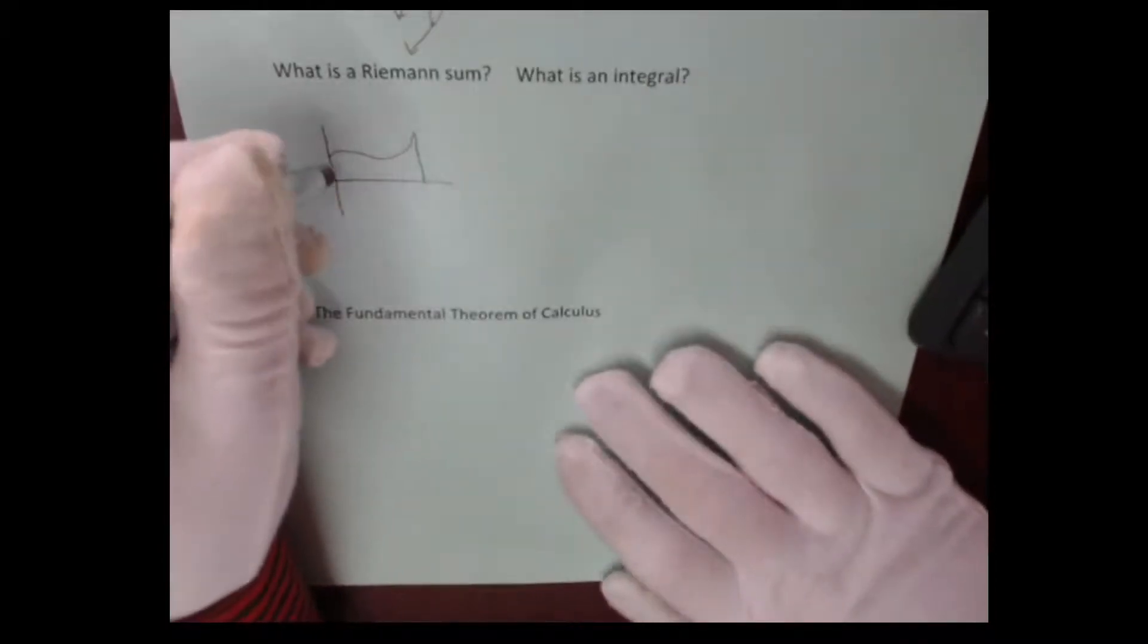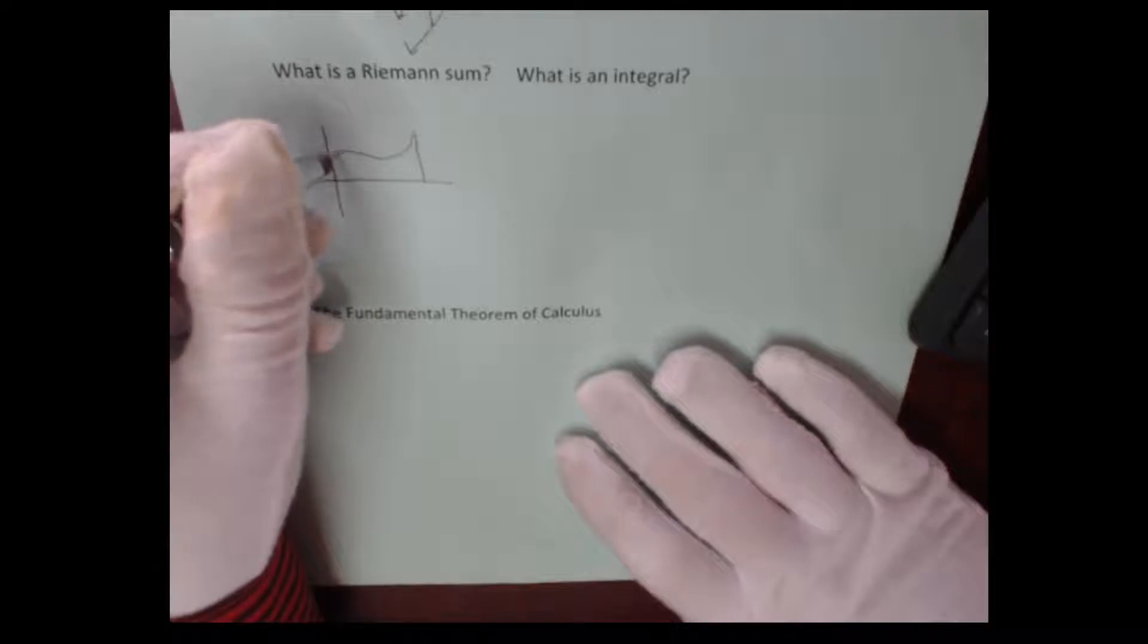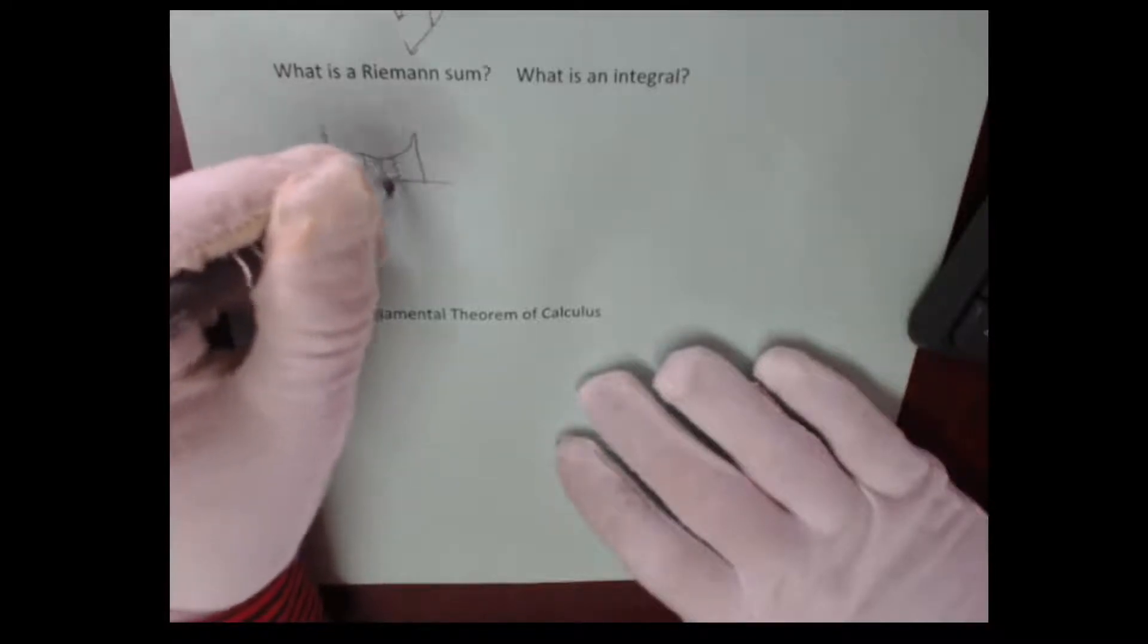Well, this is touched on much more in full calculus, but let's just talk about the idea. What we can do is we can make an approximation. We can create a bunch of rectangles, and this first group of rectangles are all going to be smaller.